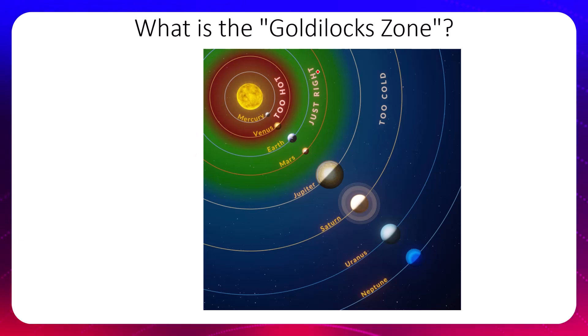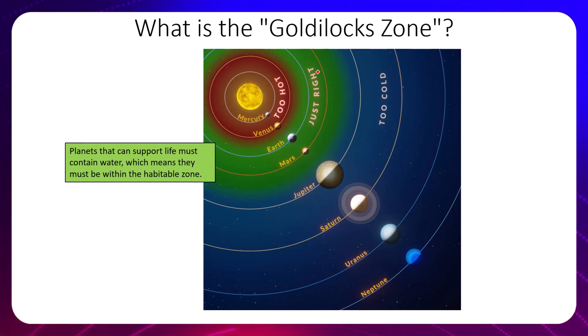So what is the Goldilocks zone? The Goldilocks zone, which would be the zone in green in this particular picture, contains the properties that would be conducive to supporting life. Planets that can support life must contain water because as we know water is fundamental to all things living, which means they must be within the habitable zone. Habitable meaning it's not too close or too far, it is just right in terms of the distance from the Sun. And as we'll find out, distance from the Sun is going to dictate in a large way whether the planet is habitable or not.